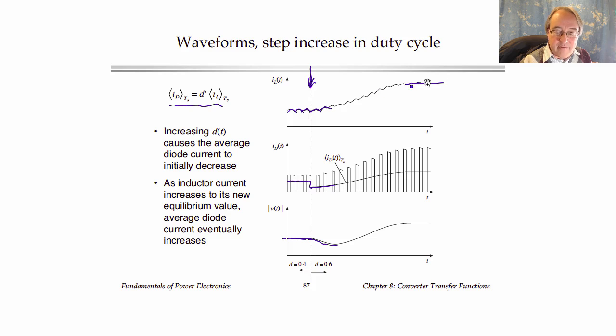In fact, in steady state, the inductor current goes like VG over D prime squared R. So with that square, the inductor current will build up to a much larger value. And we see eventually that the average diode current builds up to a value where the average is greater than it was before, even though the D prime interval is shorter.